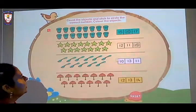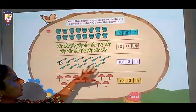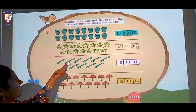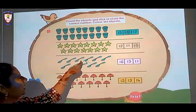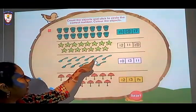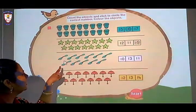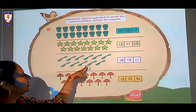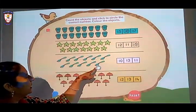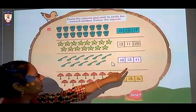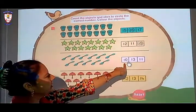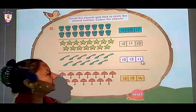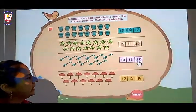Now what are these? These all are spoons. Let's count. 1, 2, 3, 4, 5, 6, 7, 8, 9, 10, 11. Here are 11 spoons. So where is 11? Here it is. We have to circle that number.